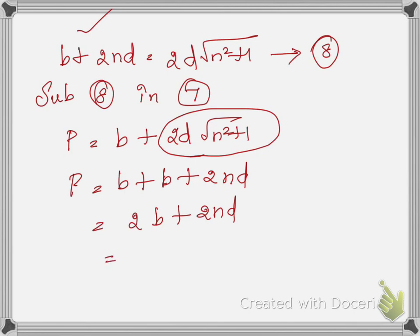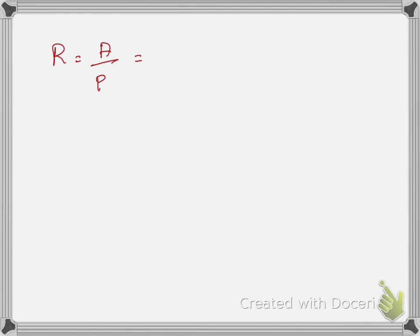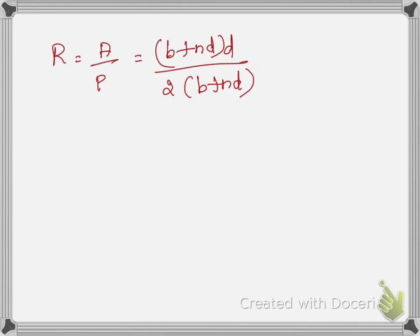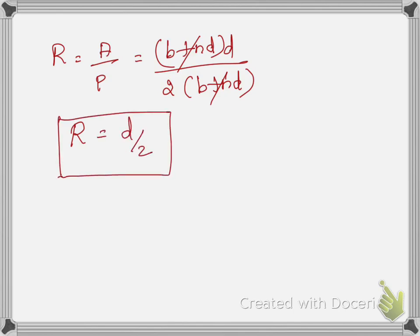With P = 2(B + nD), the hydraulic radius becomes R = A/P = (B + nD)·D / [2(B + nD)]. The (B + nD) terms cancel, giving R = D/2. Therefore, the second condition is: for a most economical trapezoidal channel, the hydraulic mean depth must equal half the depth of flow.